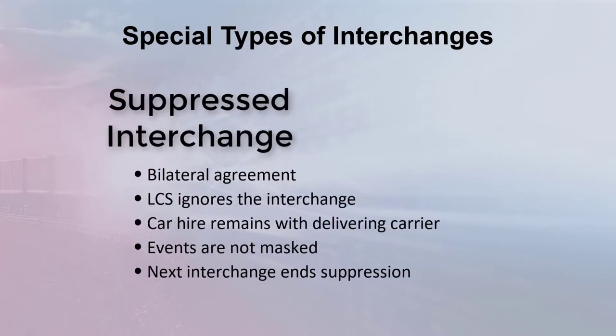A third special interchange arrangement is the suppressed interchange. In cases where a suppressed interchange is in effect, the interchange is completely ignored. Car hire remains in the account of the delivering carrier. Suppressed interchange is usually used when one carrier is paying car hire on behalf of another. For example, if a class 1 carrier has agreed to pay car hire on behalf of a short-line connection, the interchange between the two carriers may be registered as suppressed. LCS ignores all interchange reported at a location registered as suppressed. Car hire remains with the delivering carrier until another interchange is reported. Since events are not masked, the car owner can see the movements of the car.